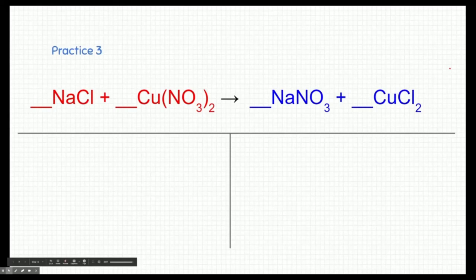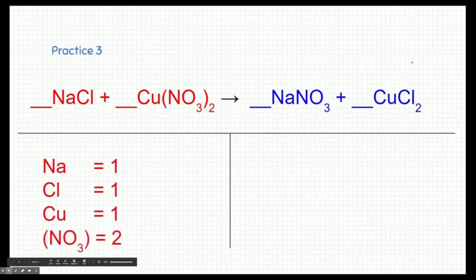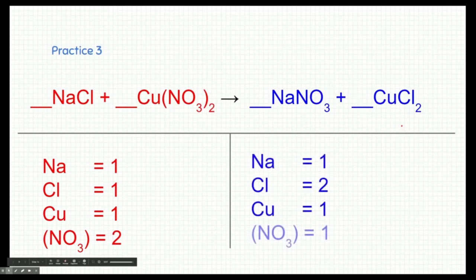Did you try it yourself? All right, let's see if we can do it together. On the reactant side, we have sodium, chlorine, copper, and we're going to keep nitrate together. There's one sodium, one chlorine, one copper, and this little subscript two on the outside of nitrate represents that there's two nitrates. We can do this because we find nitrate on the other side. On the product side, we have one sodium, we have two chlorines, we have one copper, and we only have one nitrate. So there's our nitrate right there.